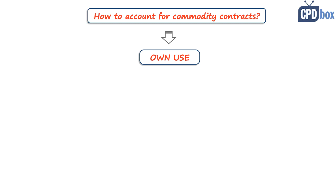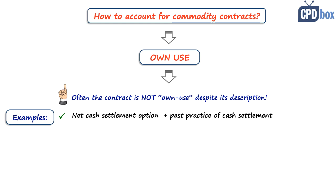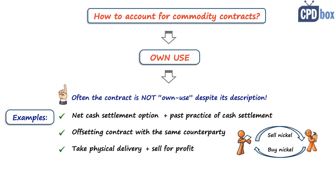It can happen that the contract is not an own-use contract despite being described as such. For example, if there's a possibility of net cash settlement in the contract and the past practice shows that contracts are often settled in cash, that could indicate they are not for own-use but for making profits on changes in market prices. Second, you would normally enter into an offsetting contract with the same counterparty — say, a contract to buy nickel and one to sell nickel with the same entity — that's net settlement too. Or you take delivery and immediately sell it to make profit, so you're not using the commodity for own-use.